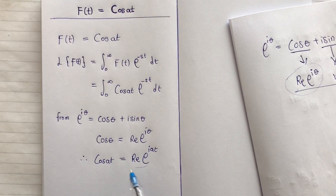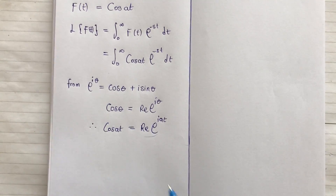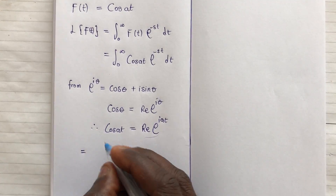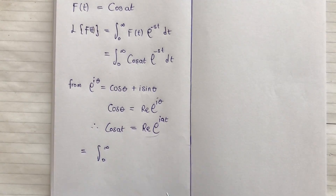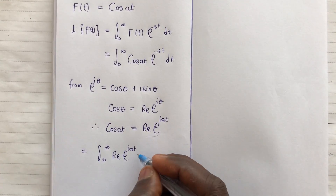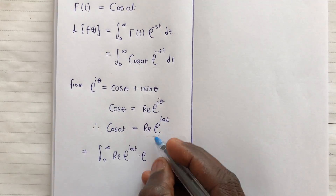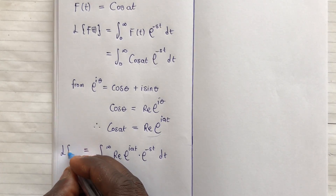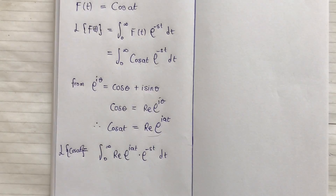We represent cos(at) with Re{e^(i·at)}, so the integral becomes the integral from zero to infinity of Re{e^(i·at)} times e to the power minus st dt, and this is the Laplace transform of cos(at).